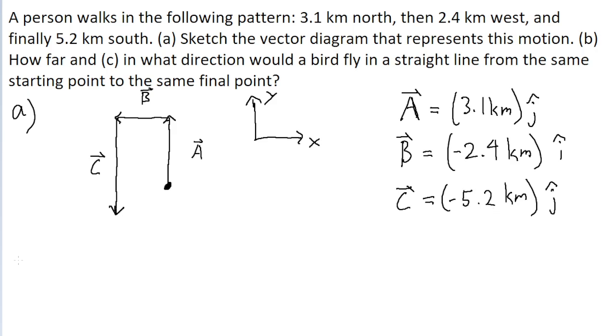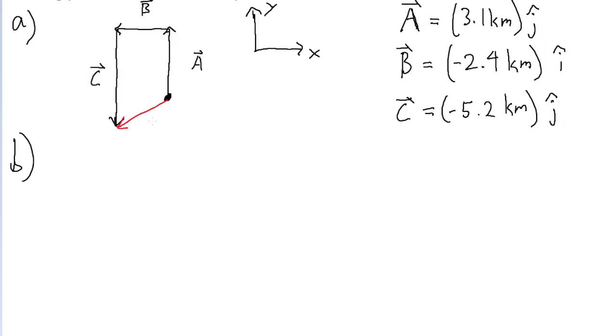Now part B of the problem asks us to find how far a bird would have to fly in a straight line from the same starting point to the same final point. So if the bird was flying from the starting point to the same final point we had before. So really what this problem is asking us to find is the resultant vector of the three legs. So to find this resultant vector, which I'm going to label R,